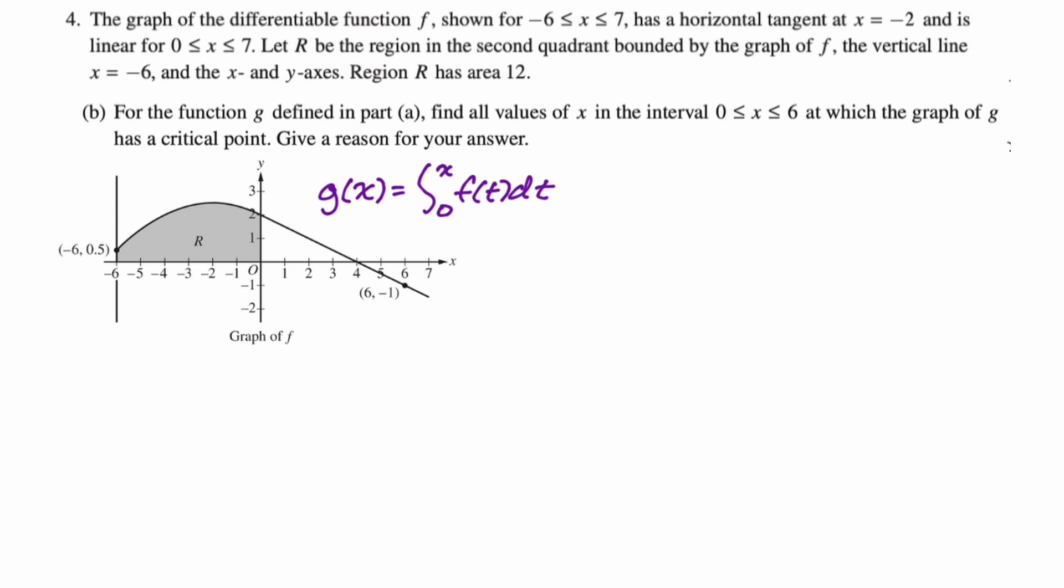So we're going to find the derivative. G prime is f of x. And then we need g prime to be either zero or undefined, but g prime is never undefined if g prime is f of x. So g prime equals zero, you can look, it's just at four. So that's the answer. But I wasn't really sure if that's all that they're looking for. So I wrote up a little sentence, g has critical point at x equals four, because g prime of four equals f of four equals zero.